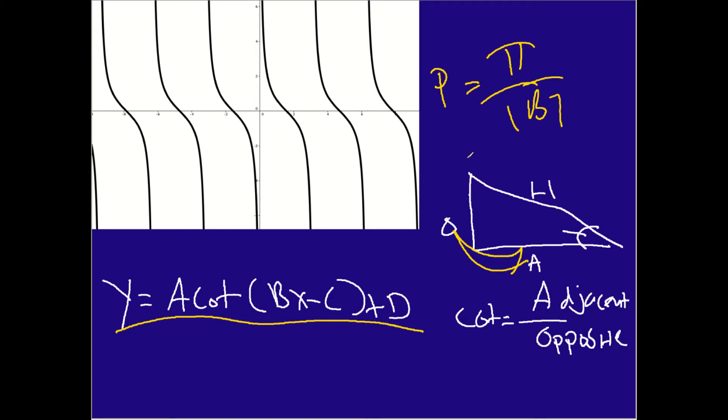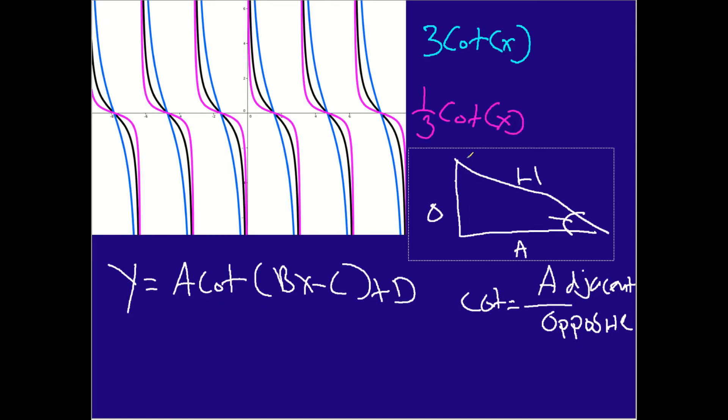And so we talked about how to calculate the period. And so now I want to kind of show you some examples. Now, right here, you can see that we have the black line represents the regular cotangent function that we saw in the previous slide. But now we have some manipulation of the a term.